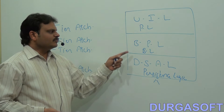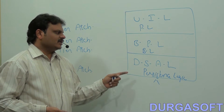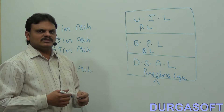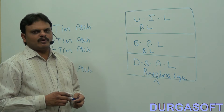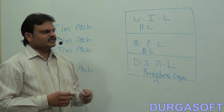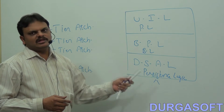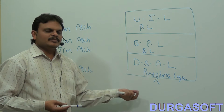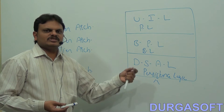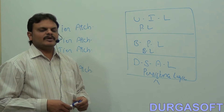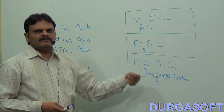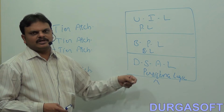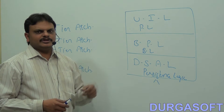The user interface layer, business processing layer, and data storage and access layer — all three logic layers we have to provide within a single machine. Once we provide all three logic layers within a single machine, single machine resources may not be sufficient. Automatically, burden will be placed on the machine and the performance of the application will be reduced.